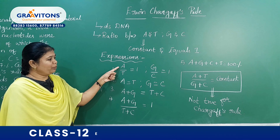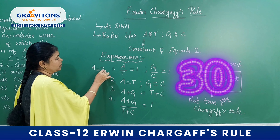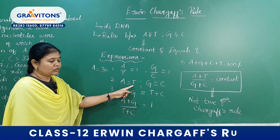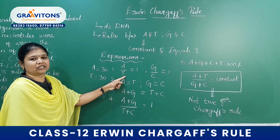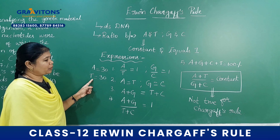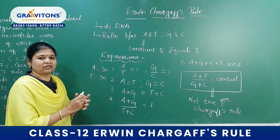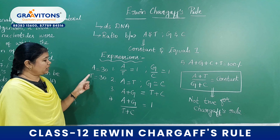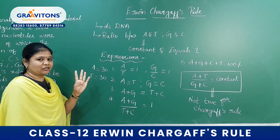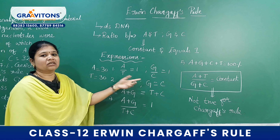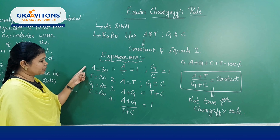Let me consider a simple example. Say A is equal to 30. So in order for A to equal 30, T also should be equal to 30. This expression will be satisfied because Adenine always pairs with Thymine. Now coming to G equals C: in a complete DNA molecule, 100% of the bases — if 60% is occupied by Adenine and Thymine, the remaining 40% will be distributed equally between Guanine and Cytosine. So Guanine equals 20 and Cytosine equals 20.